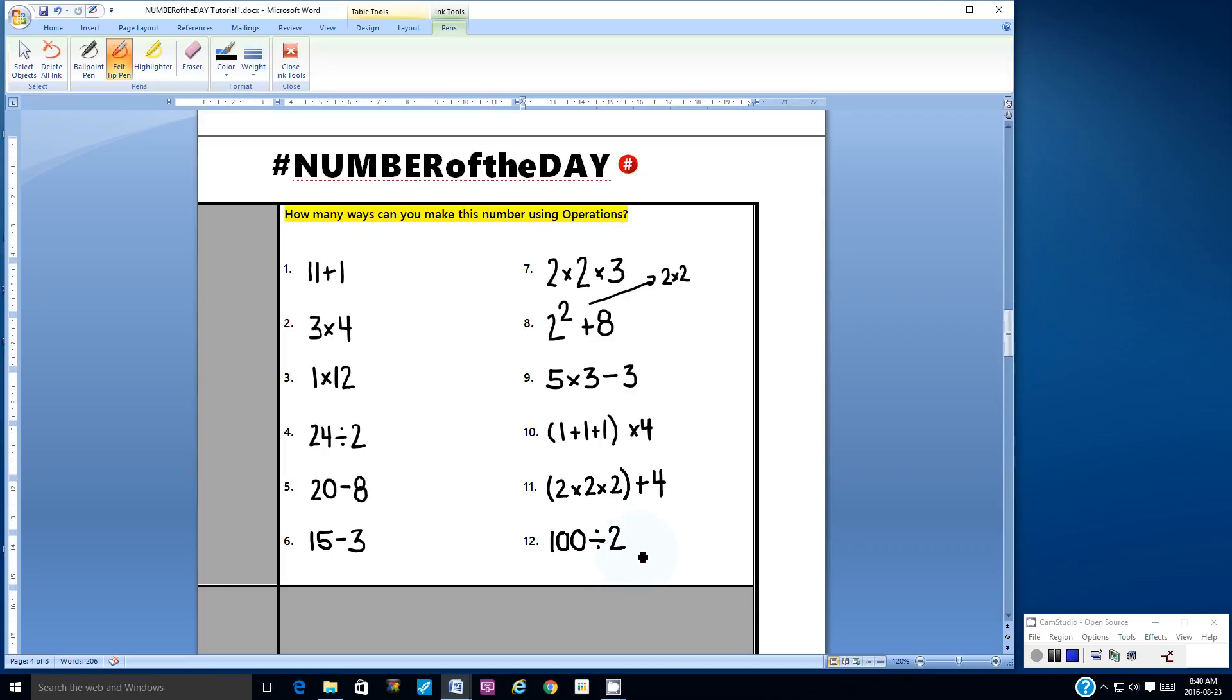100 divided by 2 is 50. So now using my calculator, what would I need to do to 50 to bring it down to 12? Well, I think we can subtract 38. So again, this question allows you a lot of variety, a lot of creativity to come up with the right answers. As long as you are using and following the rules of BEDMAS, you have to be careful. Okay. Alright. So this concludes this video tutorial on hashtag number of the day. Thanks for watching. Bye.